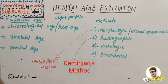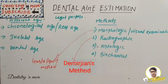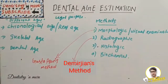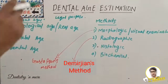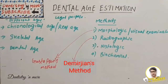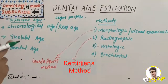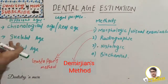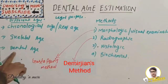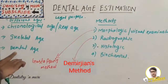Dental age is determined by studying the development of various teeth from the time of crypt formation - when the crypt is visible - until the time of root completion. We have a standardized pattern or time period where each step of tooth formation happens for a particular tooth, which doesn't vary much between people. We correlate those standardized stages of tooth development for a particular tooth and calculate the dental age.